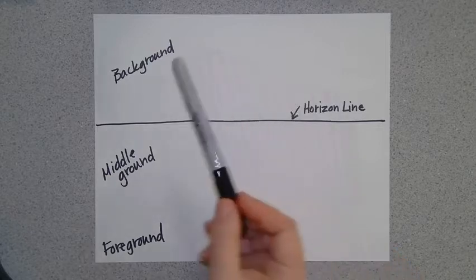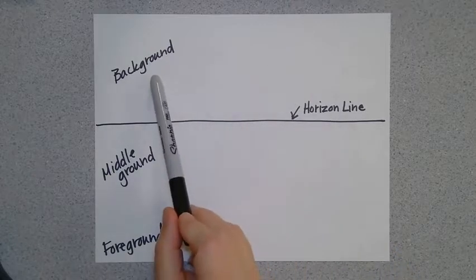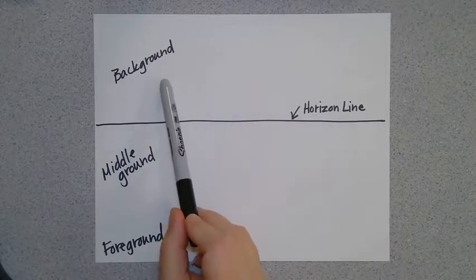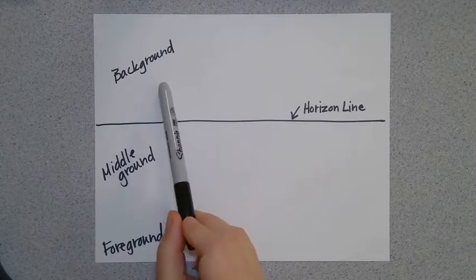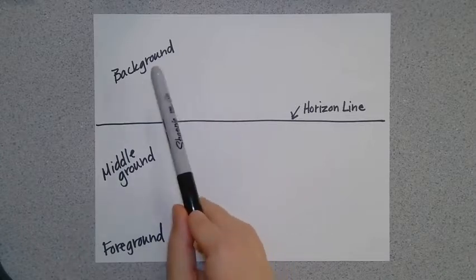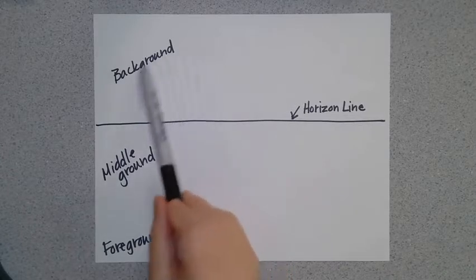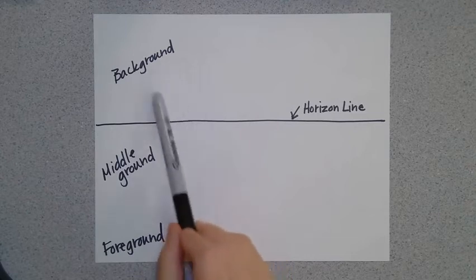The background is the part of the picture farthest away from you and nearest the horizon line. It's at the top of the picture. Things here are going to be small.